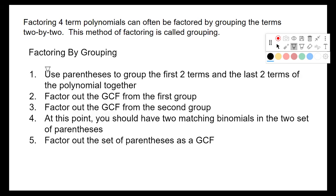Step one: use parentheses to group the first two terms together and the last two terms together. Then factor out the GCF from the first group of parentheses, and then factor out the GCF from the second group. Note: the two GCFs you factor out don't have to be the same. But at that point, the two binomials left over in the two sets of parentheses will be the same. Finally, factor out that matching binomial as a GCF and write your answer. This is really about factoring out a GCF three times.